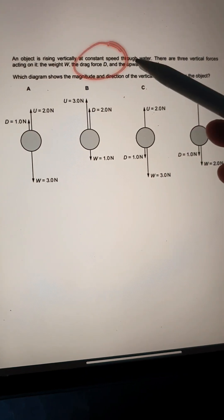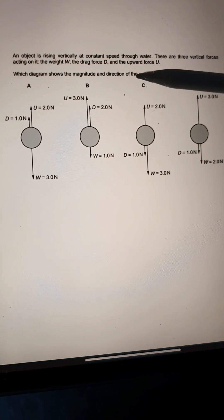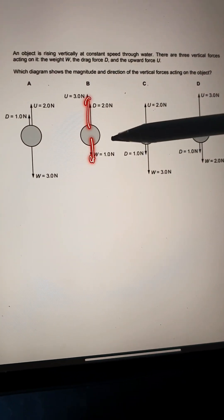Firstly, we need to know that this is constant speed. Very important because an object can only be in constant speed if its forces are balanced. The upward and downward forces have to be equal.